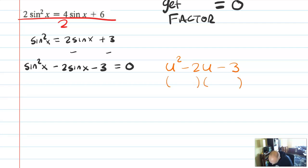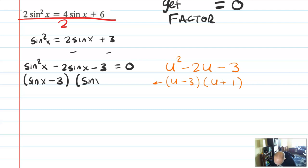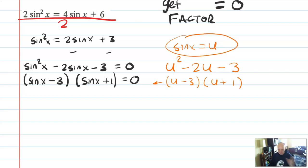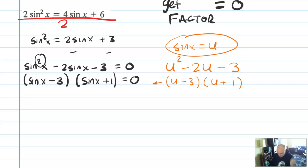I notice this is a quadratic equation of the form u² minus 2u minus 3. I need factors that multiply to negative 3 and add to negative 2 — that's (u minus 3)(u plus 1). Substituting back with u equals sine x, I factor into (sine x minus 3)(sine x plus 1) equals 0. Factoring gets rid of the sine squared, and now I can use the zero product property to split this into two equations.